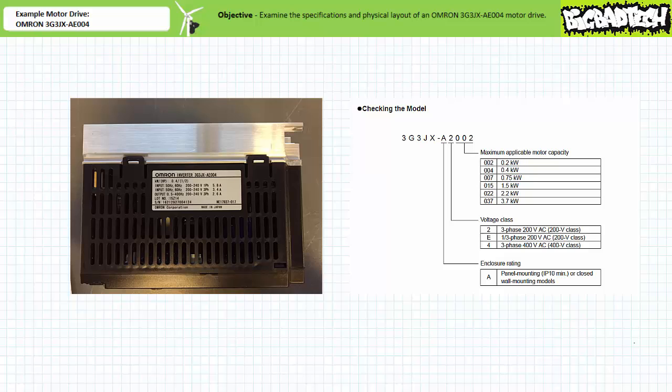The nameplate additionally specifies that this motor drive is capable of producing nominal 200 volt three phase AC output in a range of 0.5 to 400 hertz.